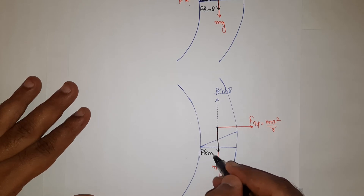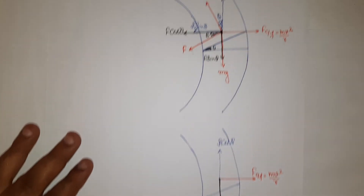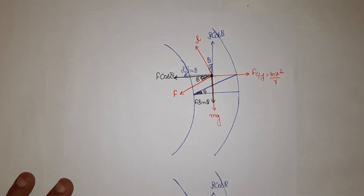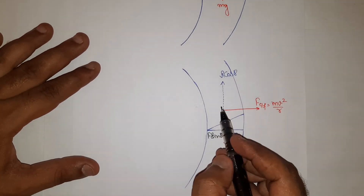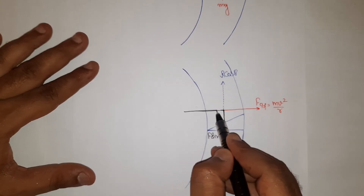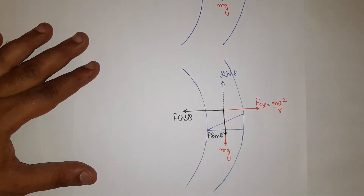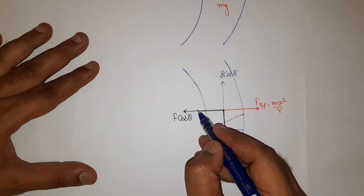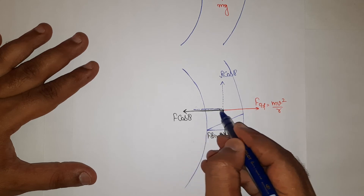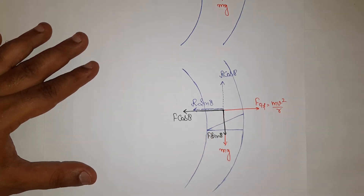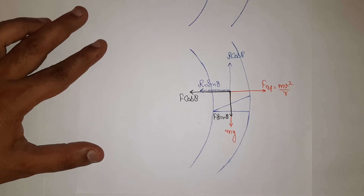Horizontally towards center, the components are: F·cosθ (cos-component of force of friction) and R·sinθ (sin-component of normal reaction). Now pause and check that no force component has been left out — both components of normal reaction and both components of force of friction have been accounted for.